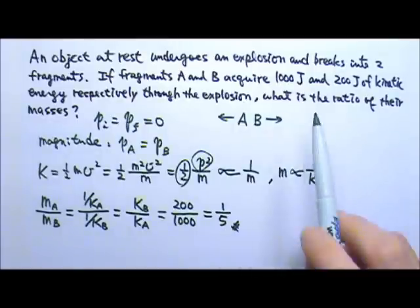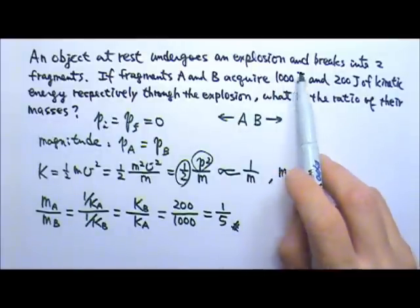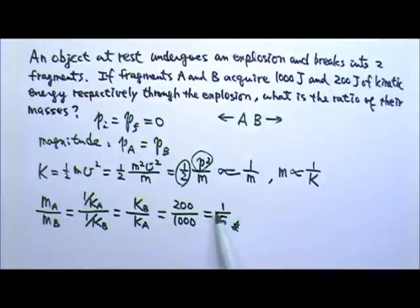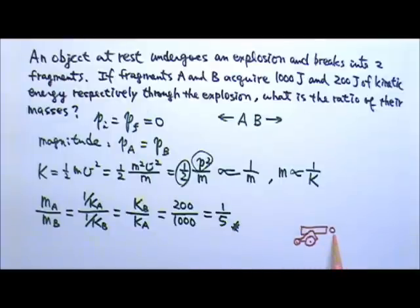This tells us the fragment with more energy has smaller mass. That's why a cannon is much heavier than a cannonball—most of the explosion's energy goes to the lighter cannonball.